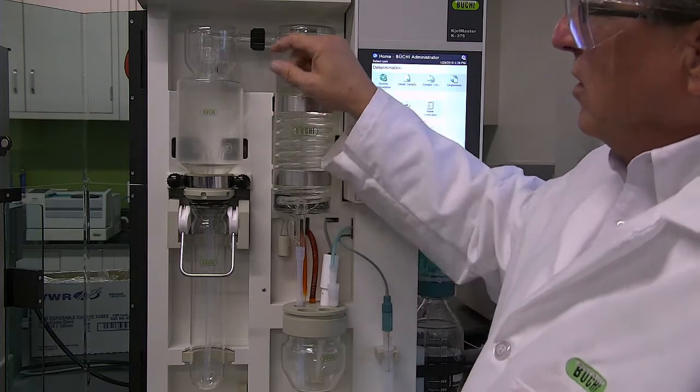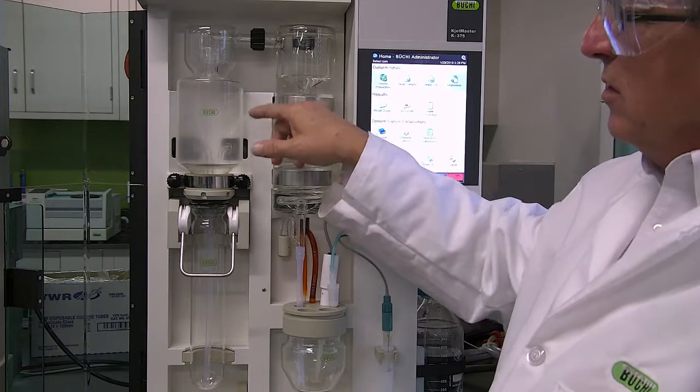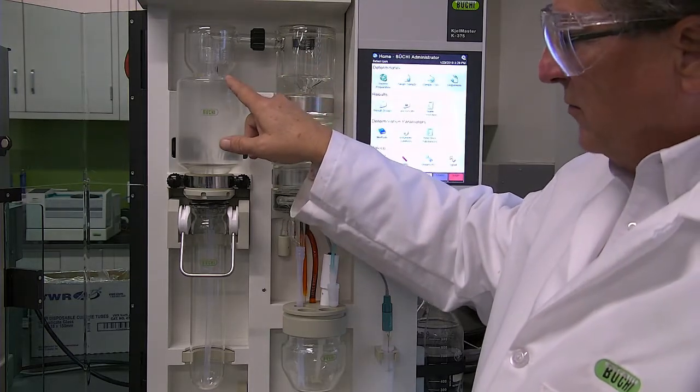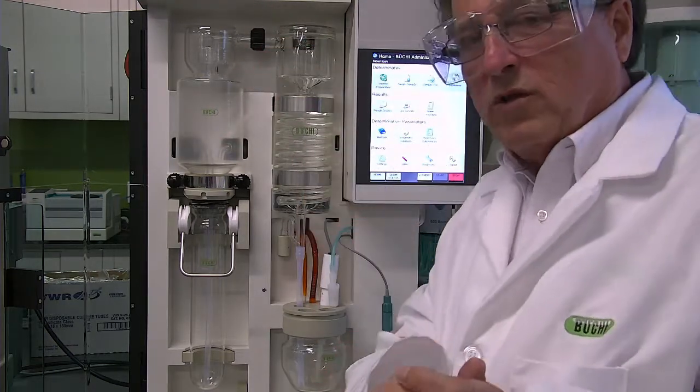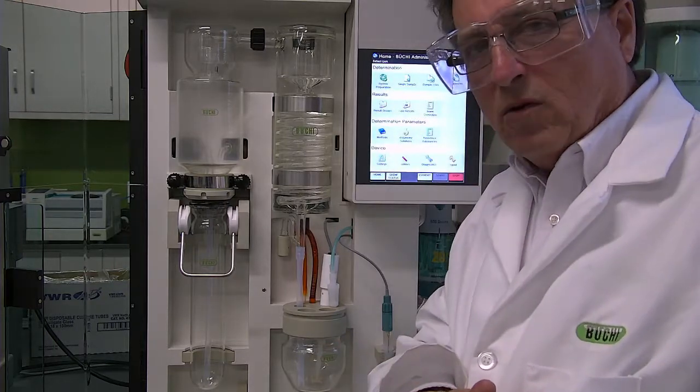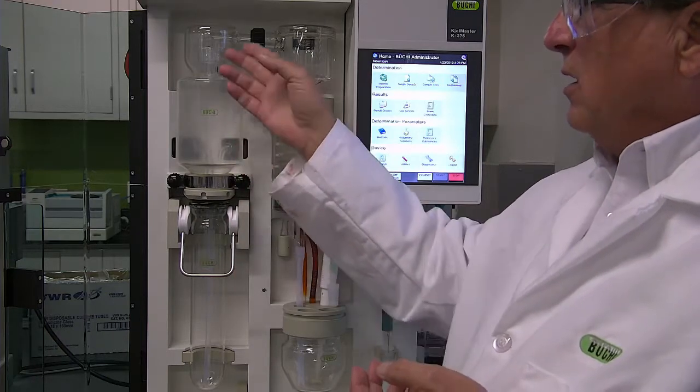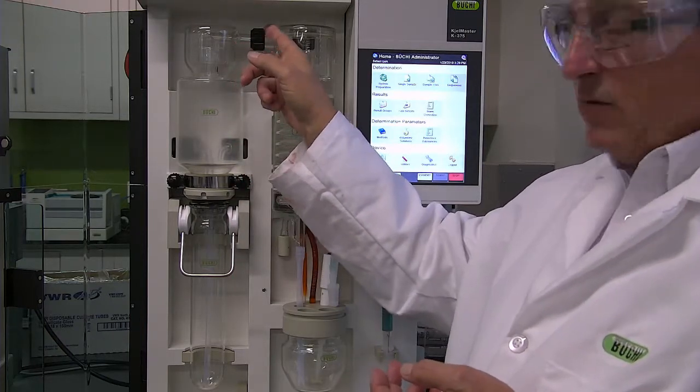The first is up here. This is the seal between the condenser and the splash guard. This is probably the most likely reason why your nitrogen levels could be low. When the ammonia is evolved, it goes up here and leaks right out.